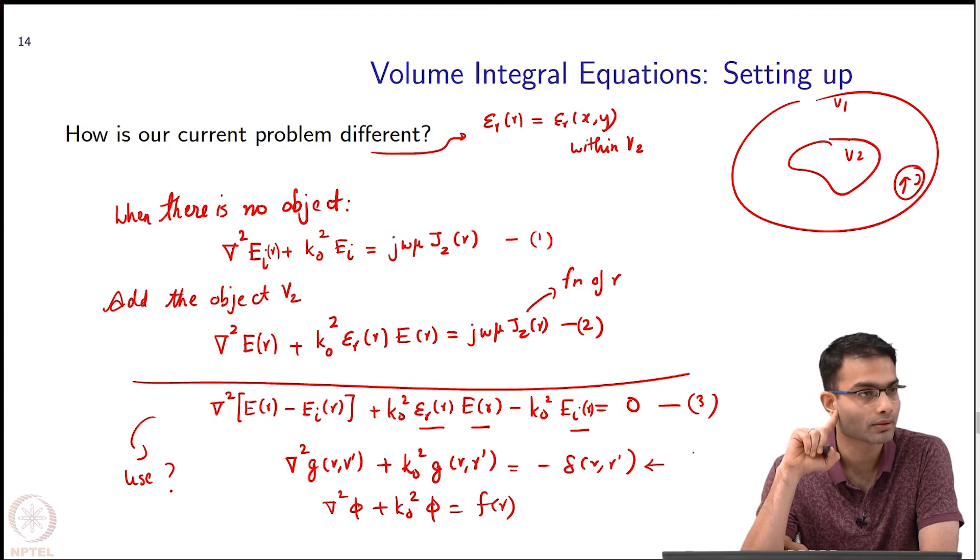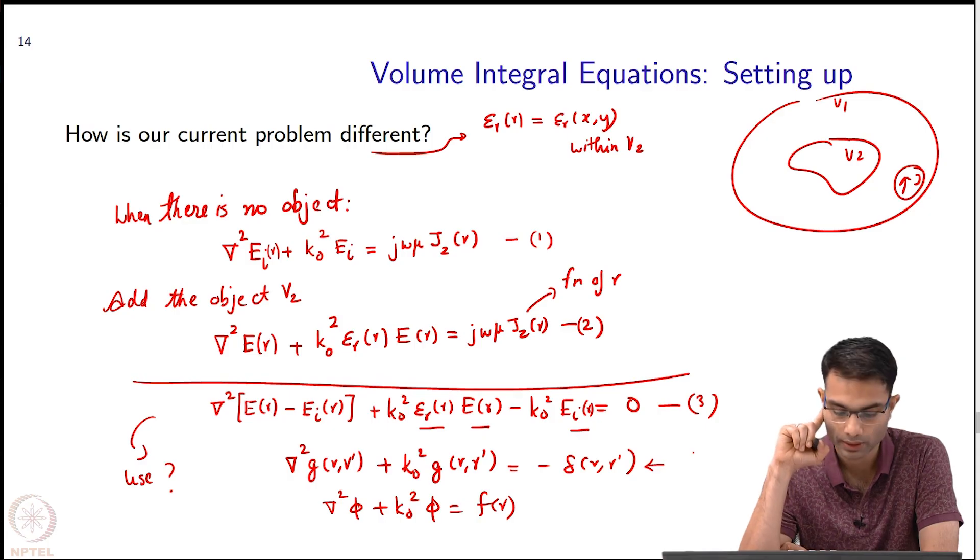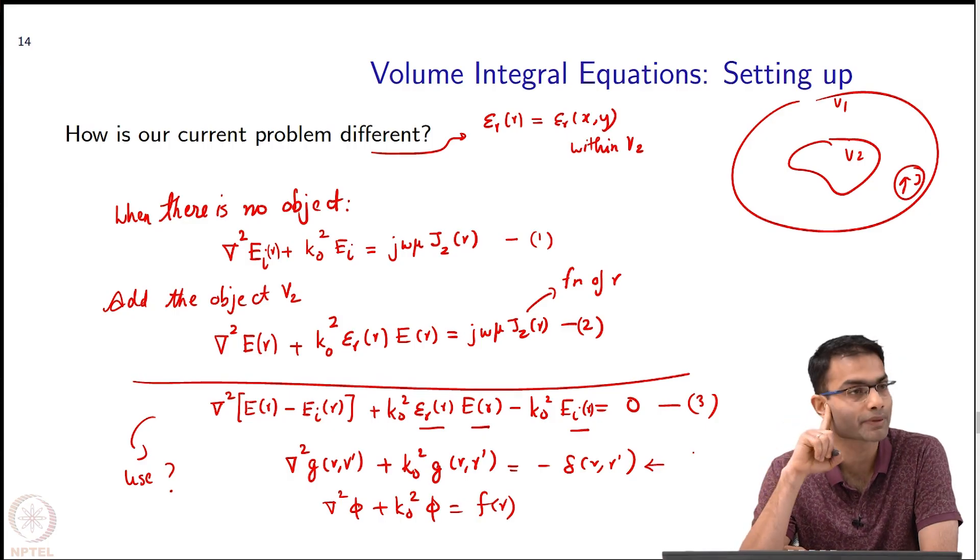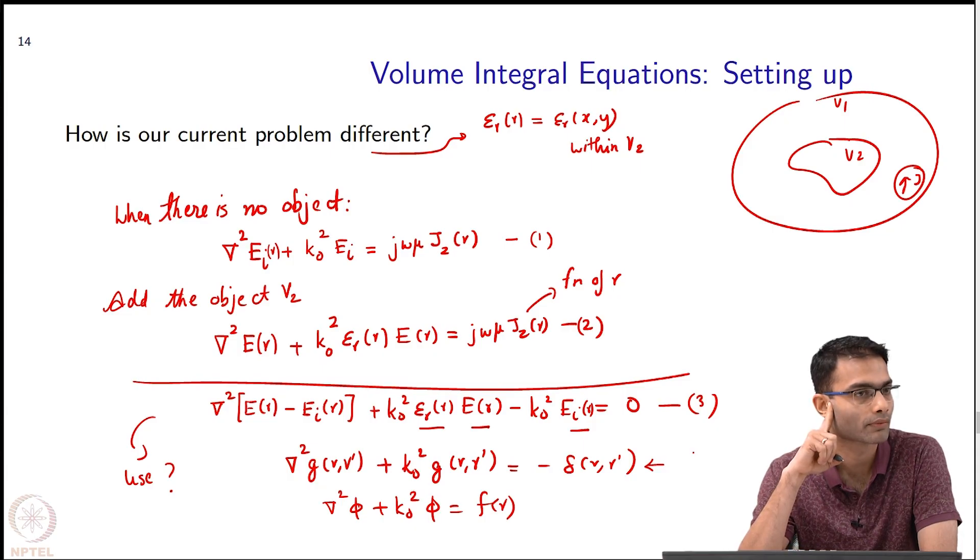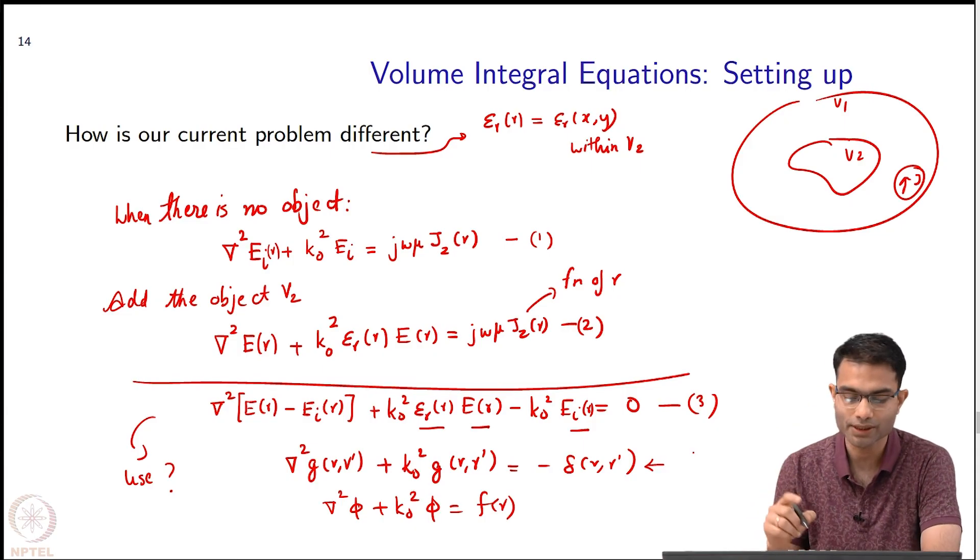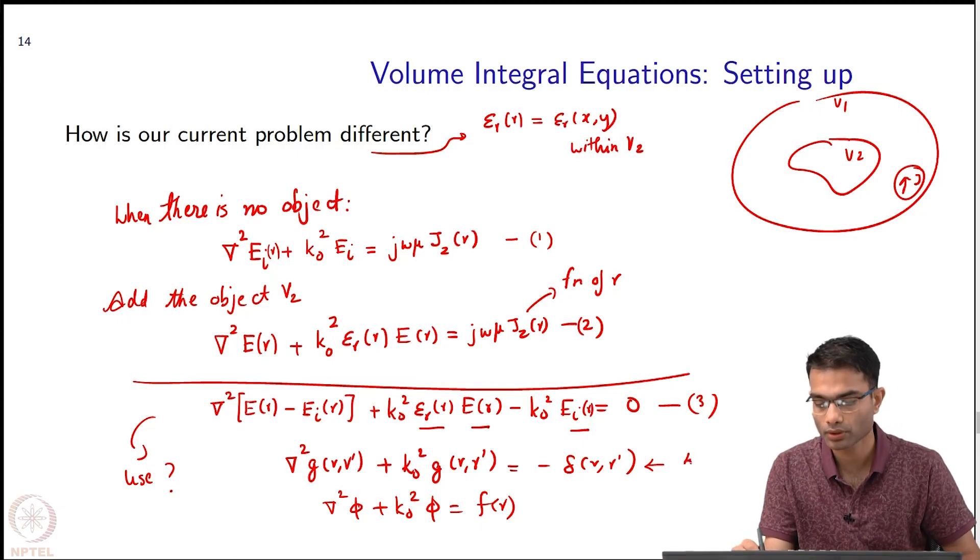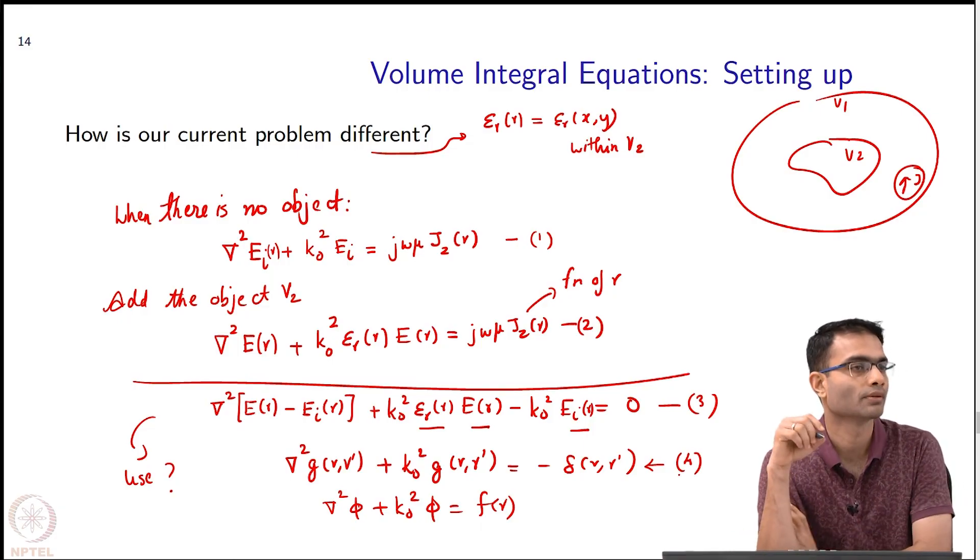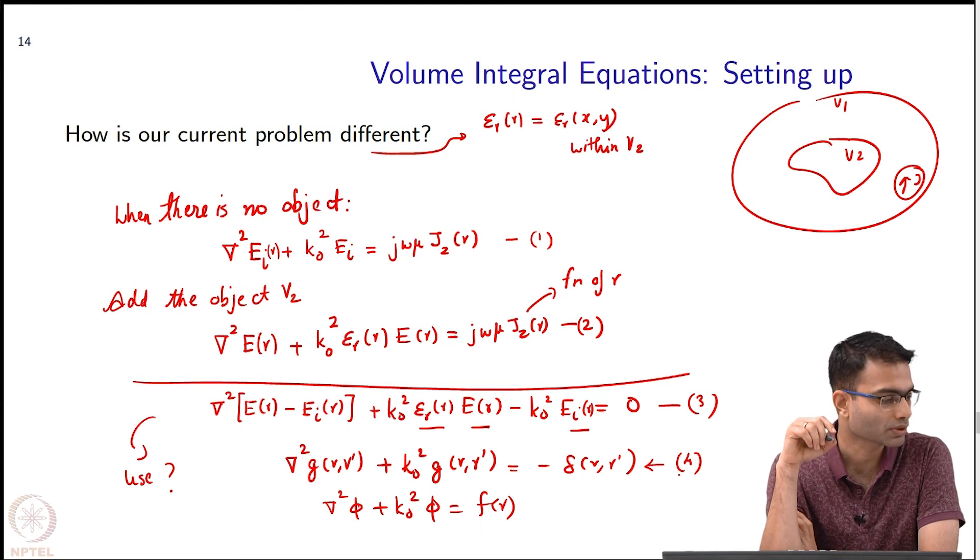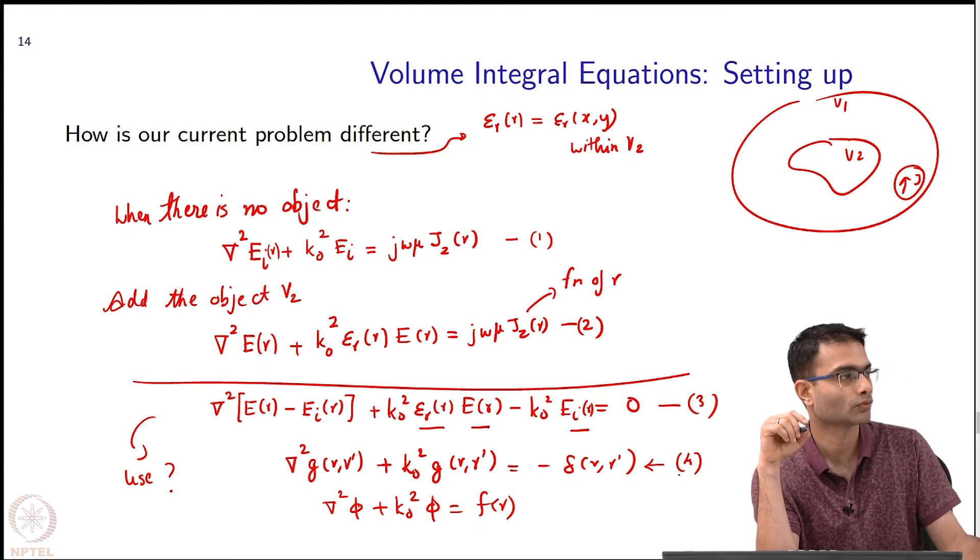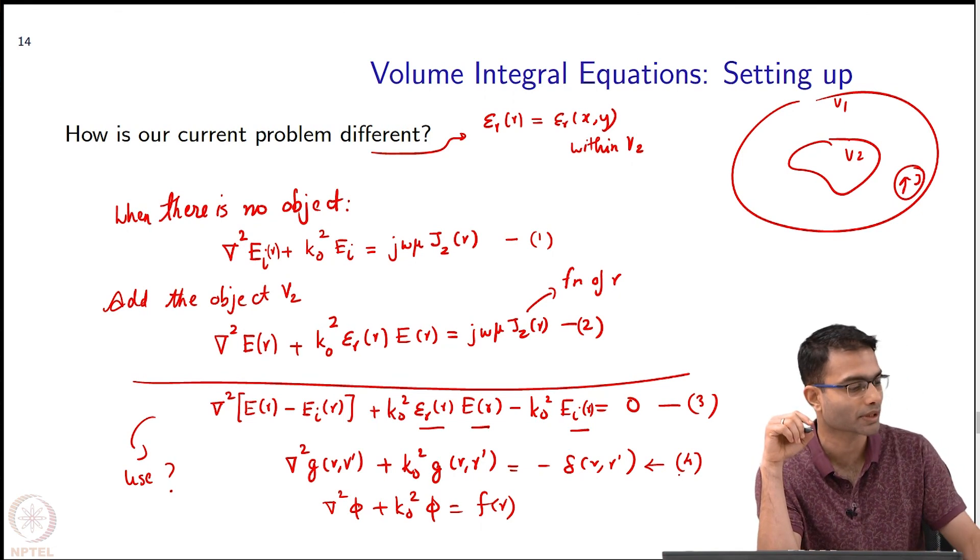E minus e i that I can think of as phi, but what about the second term, the term that accompanies k naught squared, is it in that form yet? It is not. I cannot immediately use this equation 4 to solve equation 3, but does it look impossible to do? No, there is just some simple manipulation that I have to do.